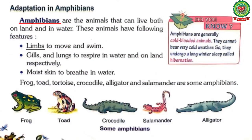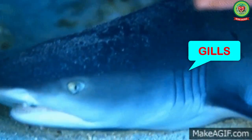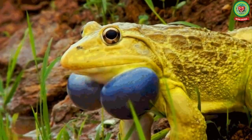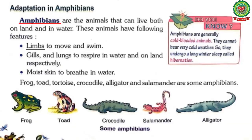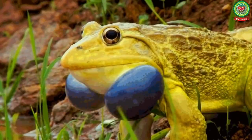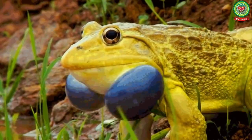Amphibians have gills and lungs to respire in water and on land respectively. In water, animals breathe through gills, but on land they breathe through lungs. They also have moist skin to breathe in water. For example, a frog in its larval stage — that is, tadpole — breathes through lungs and moist skin.